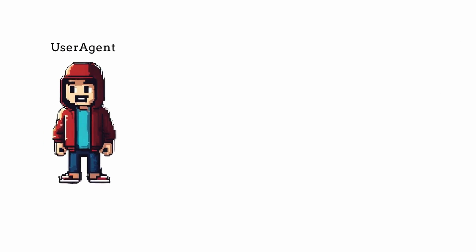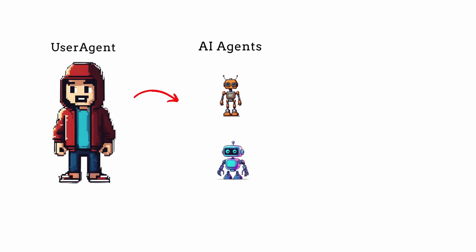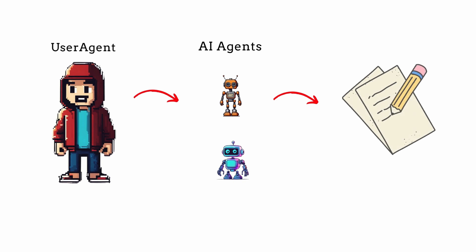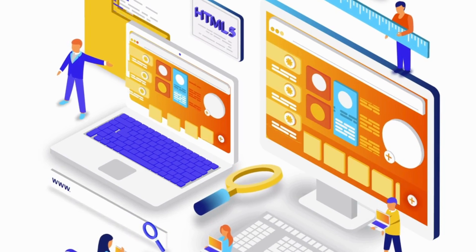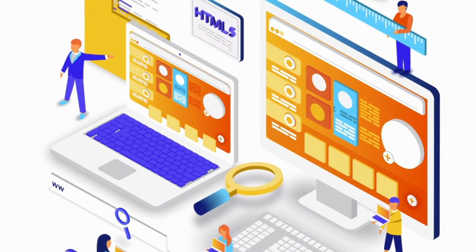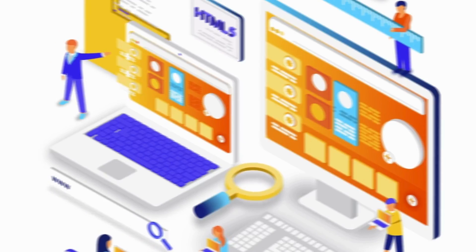Today we're going to be creating an AI service that's going to generate a YouTube script and description. We'll be creating a UI using Gradio. We'll have our user agent and then two assistant agents — one for the script and one for the description — and then we'll get a response back from the LLM and create the UI so you can make choices for your script.